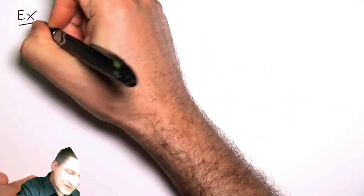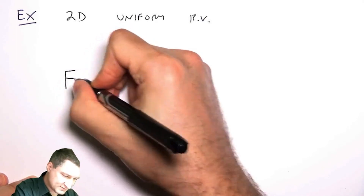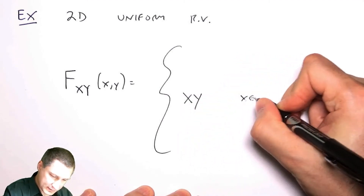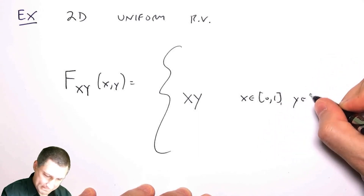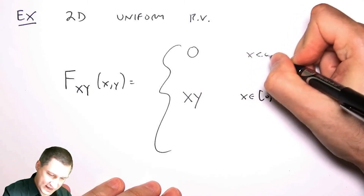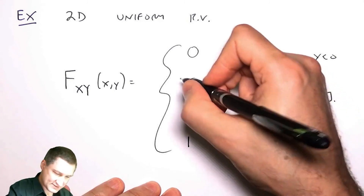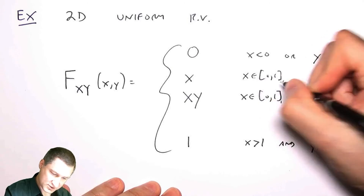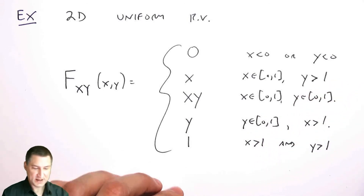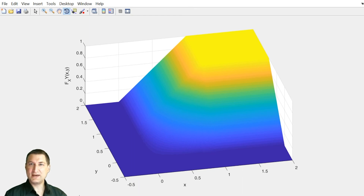This is the CDF for the 2D uniform random variable. The key operative part is that between zero and one it's equal to the product of x and y. Unfortunately there are a bunch of other case statements: it's zero if x is less than zero or y is less than zero; it's one if x is greater than one and y is greater than one; it's x if x is in the range zero to one and y is greater than one; and it's y if y is in that range and x is greater than one. Let's look at what the CDF looks like as a picture.